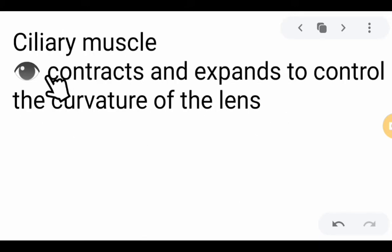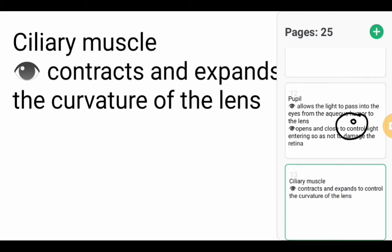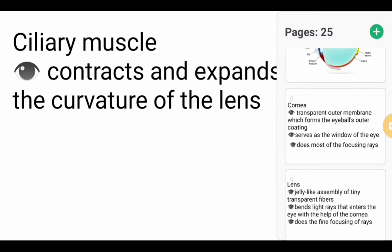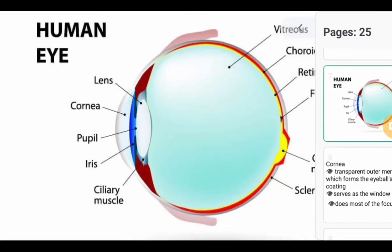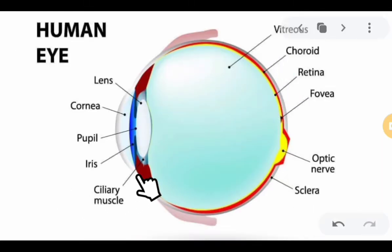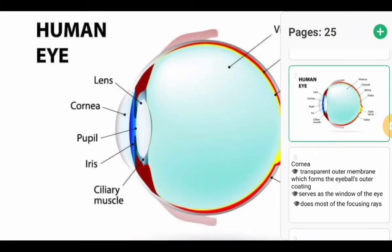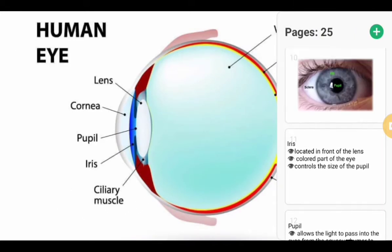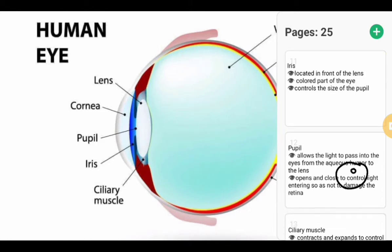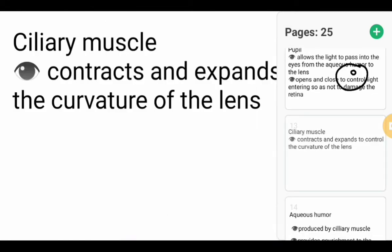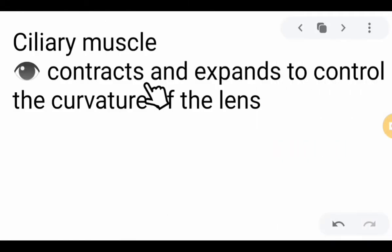Next, we have the ciliary muscle. This is the muscle where the aqueous humor is being produced. It also contracts and expands to control the curvature of the lens.